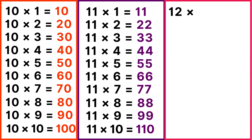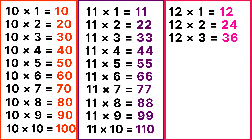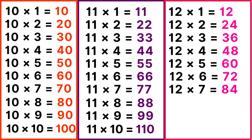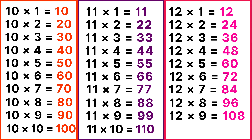Table of 12: 12 ones are 12, 12 twos are 24, 12 threes are 36, 12 fours are 48, 12 fives are 60, 12 sixes are 72, 12 sevens are 84, 12 eights are 96, 12 nines are 108, 12 tens are 120.